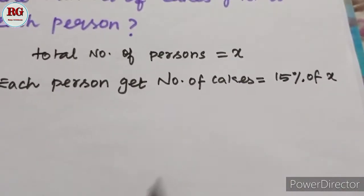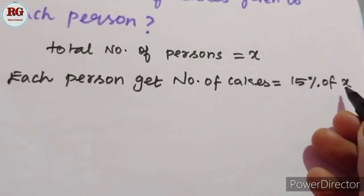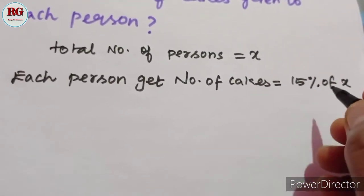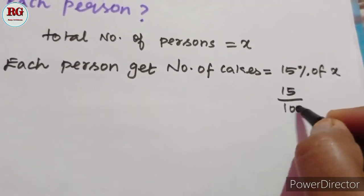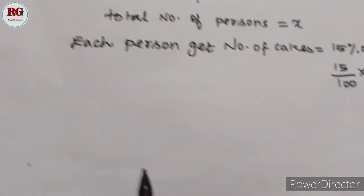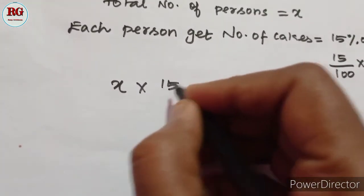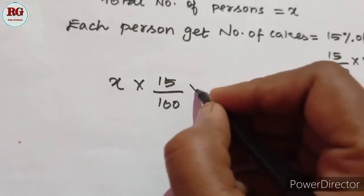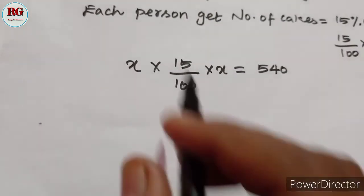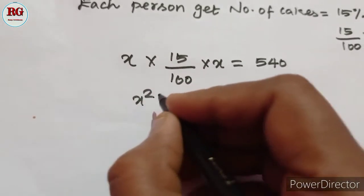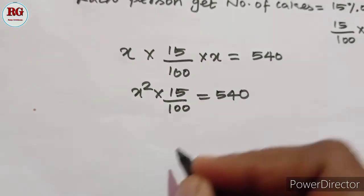So we can write this as 15/100 times X. Now, X persons times this amount gives us X² times 15/100 equals 540.